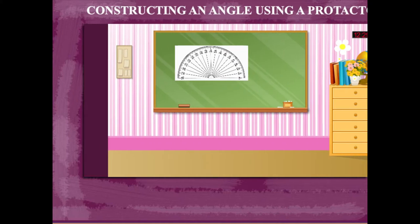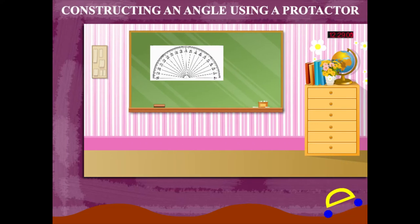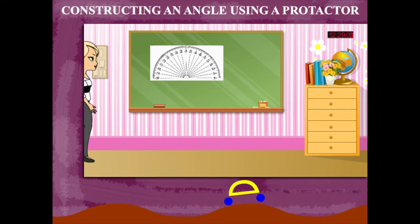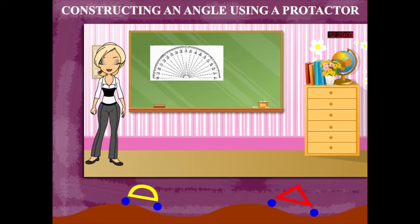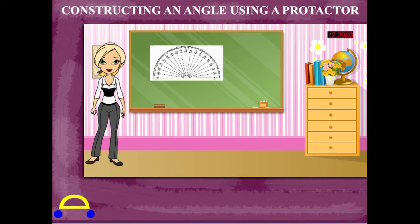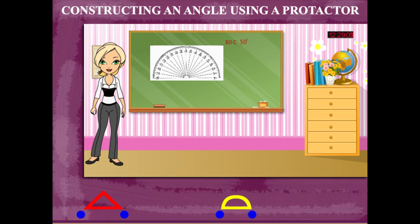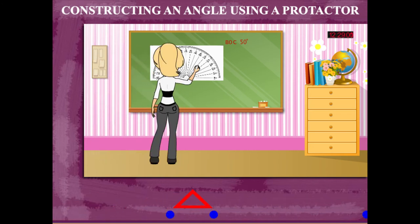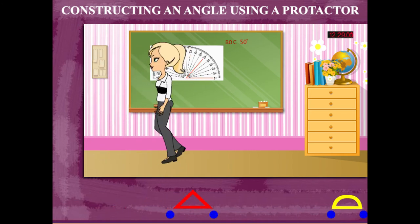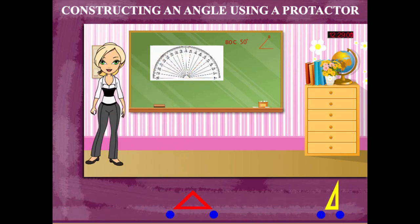Constructing an angle using a protractor. Teacher Rosie has a protractor on the board and shows how to make an angle. She demonstrates angle BOC equals 50 degrees, showing the measurement using the protractor on the board.